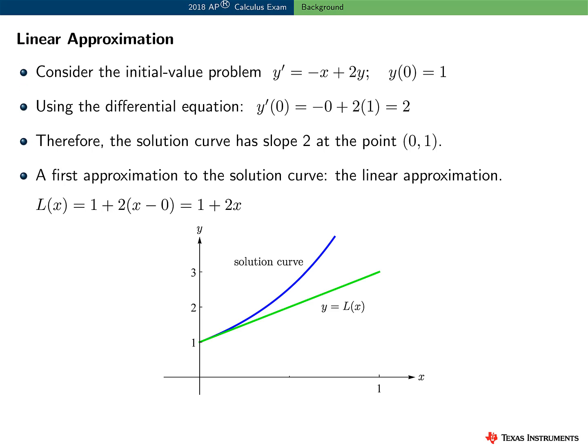The basic concept used to generate slope fields can be used to find a numerical approximation to the solution of a differential equation. Let's consider this initial value problem: y prime is equal to minus x plus 2y, where y of 0 is equal to 1. Using the differential equation, we can find y prime of 0. Therefore, the solution curve has slope 2 at the point (0, 1).